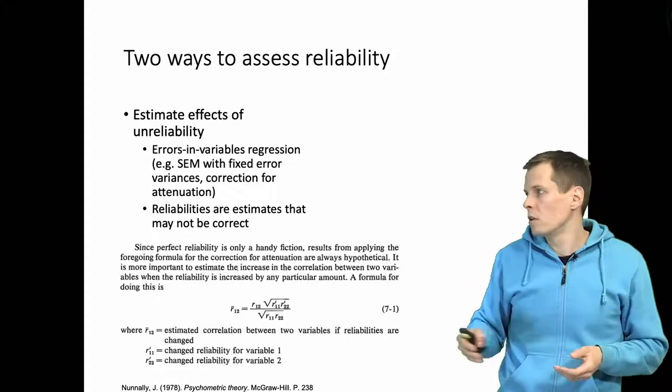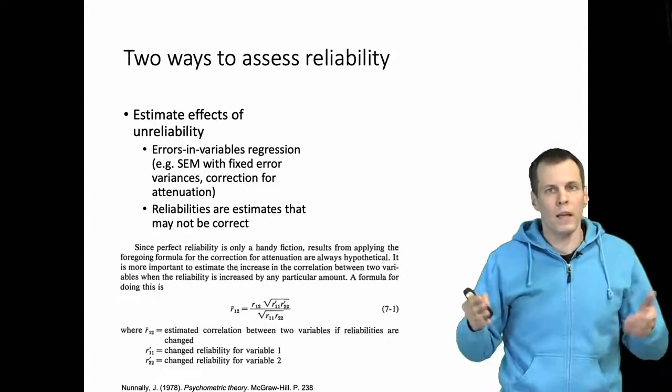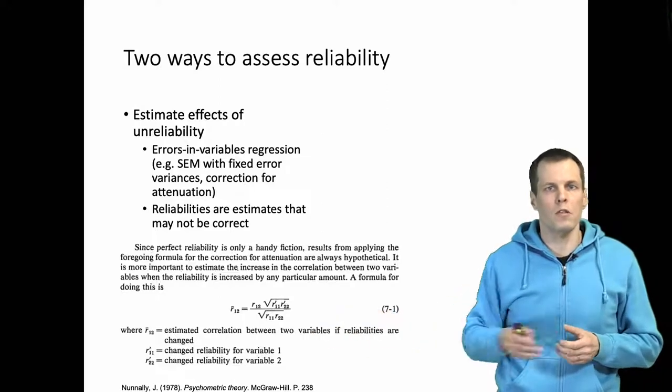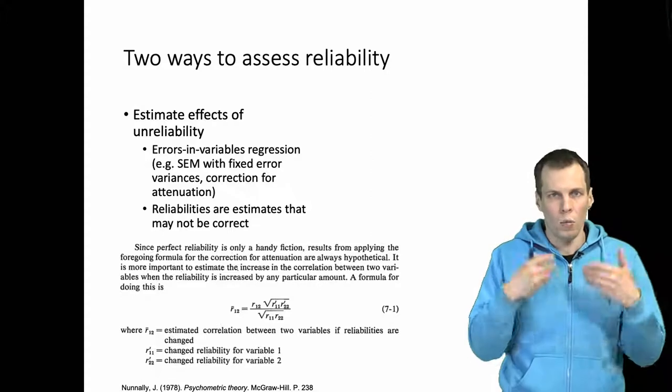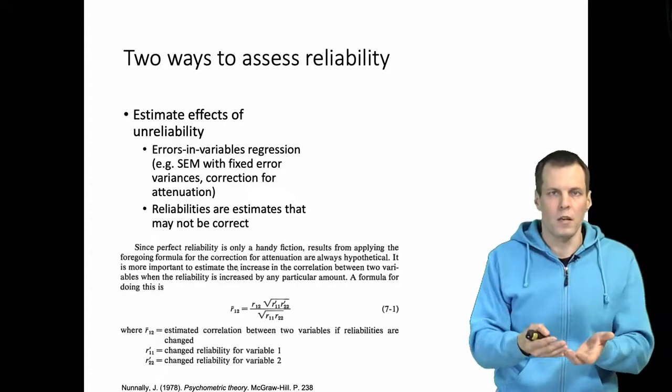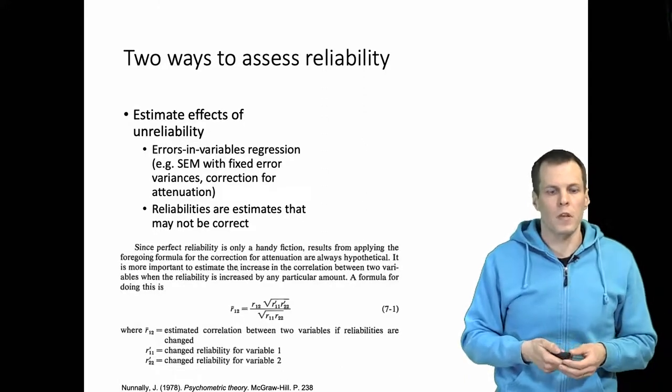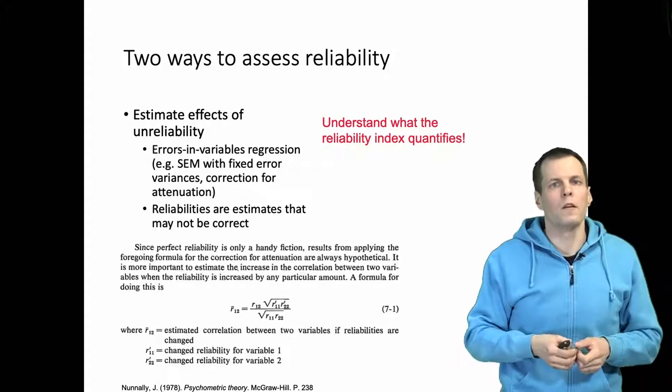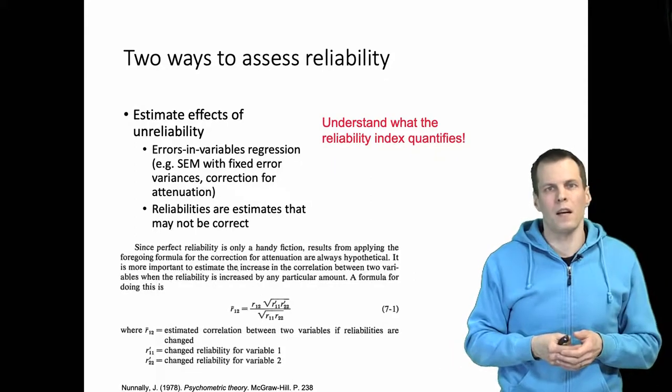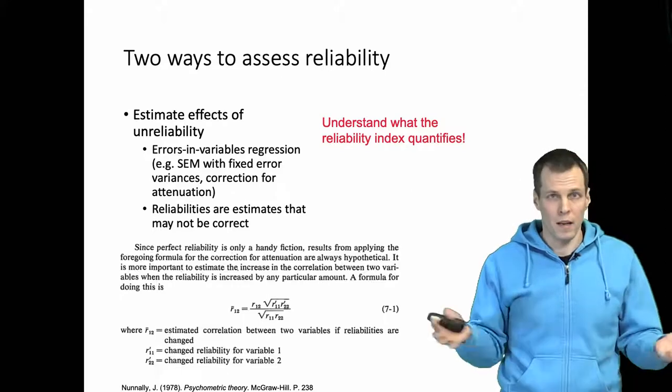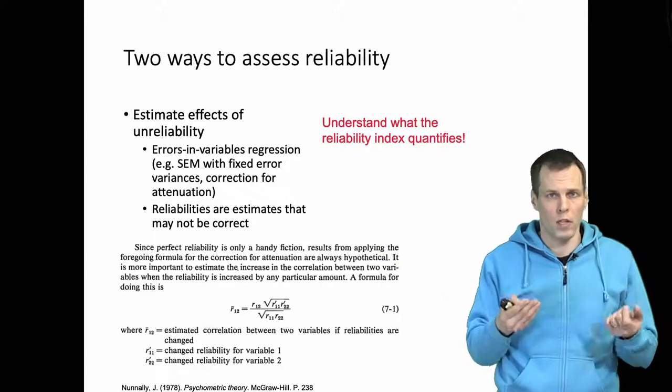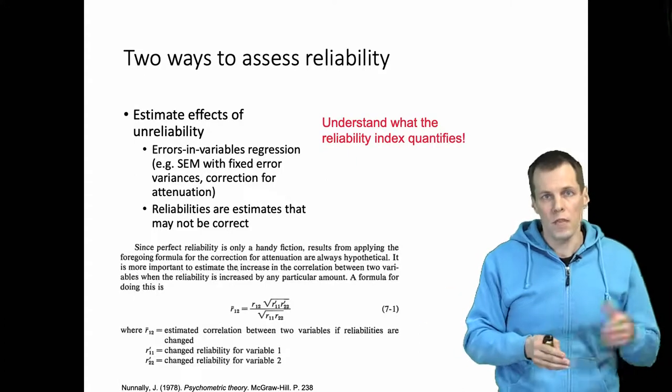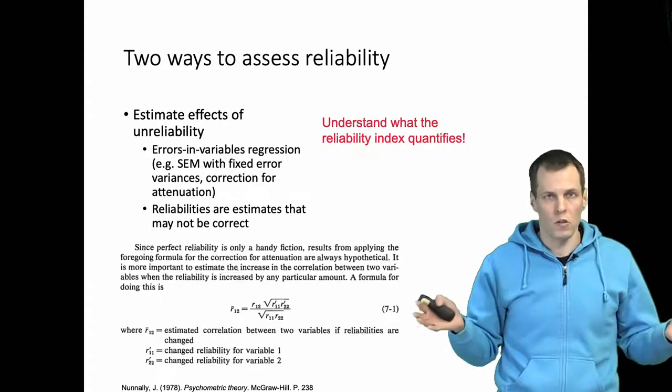One problem with these strategies is that the reliabilities are estimates, so there's uncertainty, and taking that uncertainty of the estimate into account in the correction is actually quite difficult to do. But nevertheless, even if your standard errors for the correlation corrected for attenuation would be slightly too small, the correlation is useful—or errors-in-variables is useful—to give you a what-if scenario. What if my reliability estimates are correct, and what would the result of the analysis be in that case? You should also understand what the reliability index quantifies. For example, if you use one of these multidimensional indices, then depending on which one you apply, you will get a different result for the corrected correlations or regressions. You need to understand what the reliability indices quantify to understand which should be applicable.